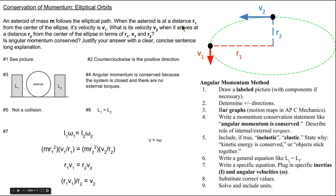When the asteroid is at a distance R1 from the center of the ellipse, its velocity is V1. What is its velocity V2 when it arrives at a distance R2 from the center of the ellipse in terms of R1, V1, and R2?